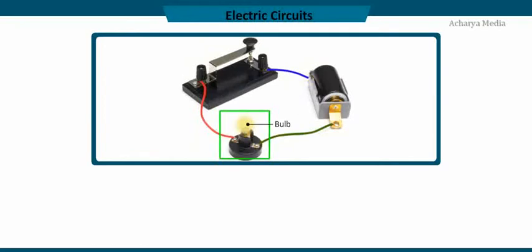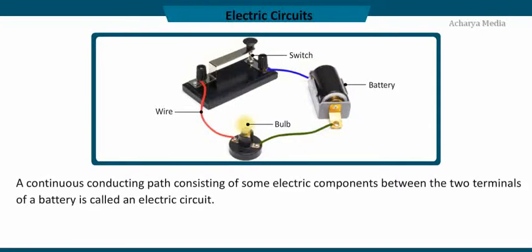When certain electric components like a bulb, a key or switch, and a conducting wire are connected to a battery in such a way that a closed path is formed for the current to flow, an electric circuit is obtained. We can define the electric circuit as follows: a continuous conducting path consisting of some electric components between the two terminals of a battery is called an electric circuit.